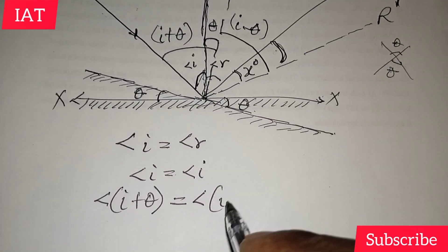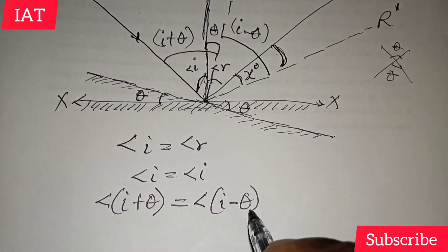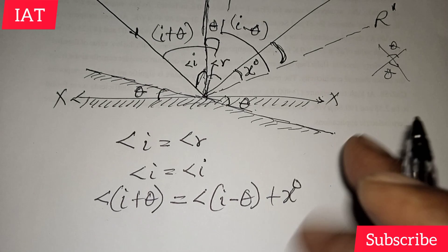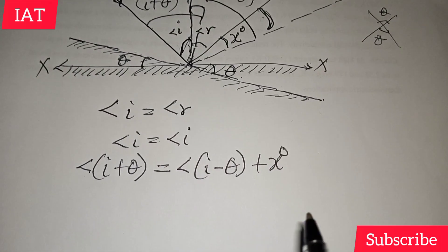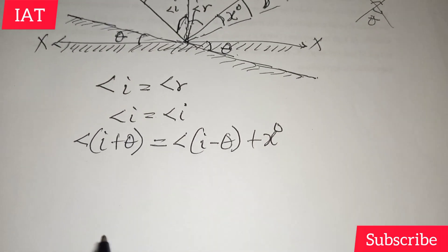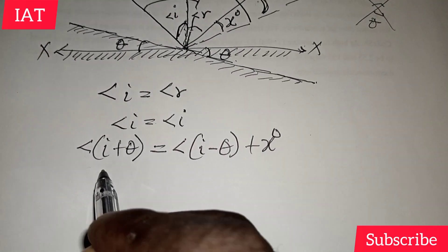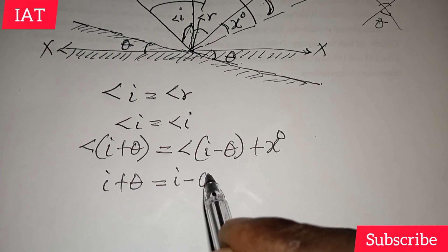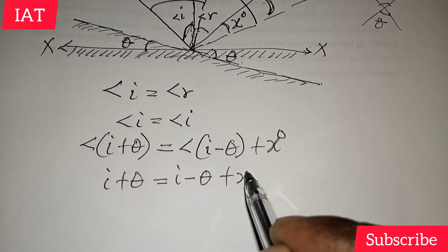We have it as i-θ. We need to add it to this x plus x degrees. You can make it any variable of your choice. It's not a problem. So at this point, we have i+θ equal to i-θ+x degrees.